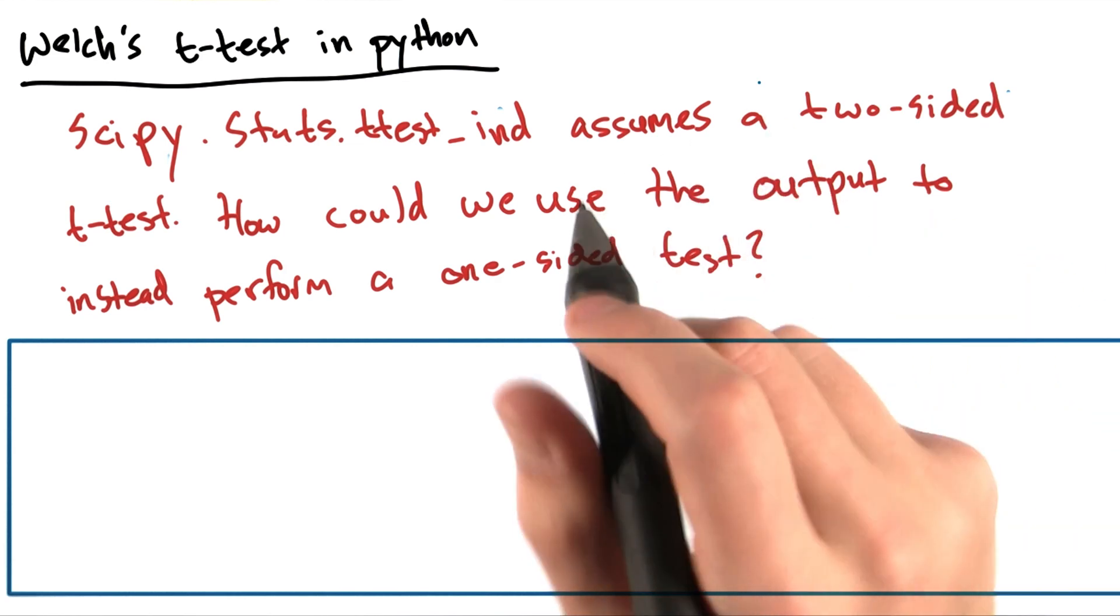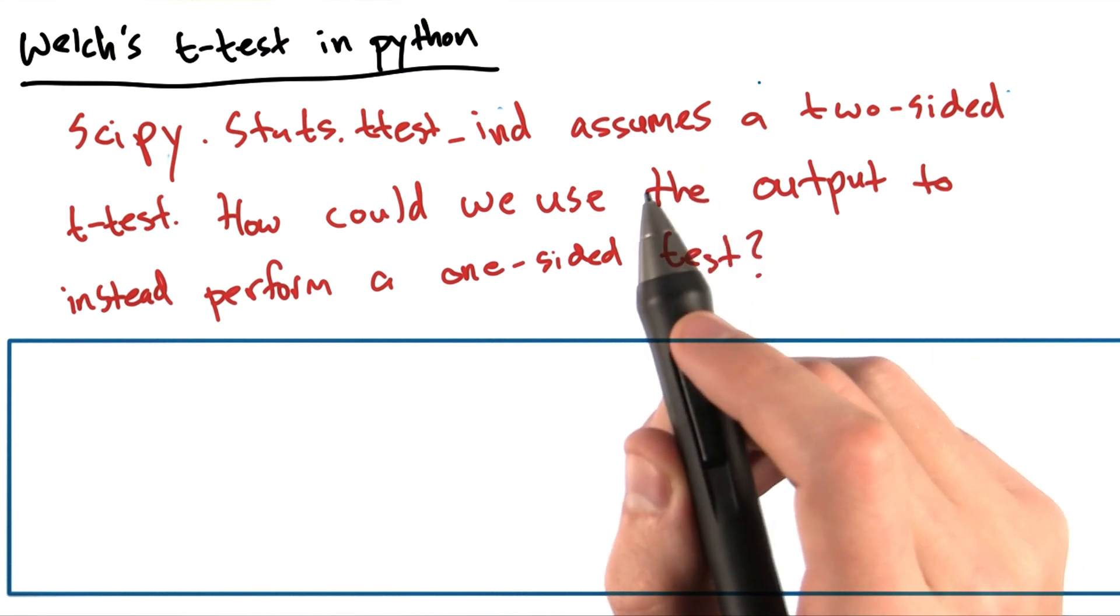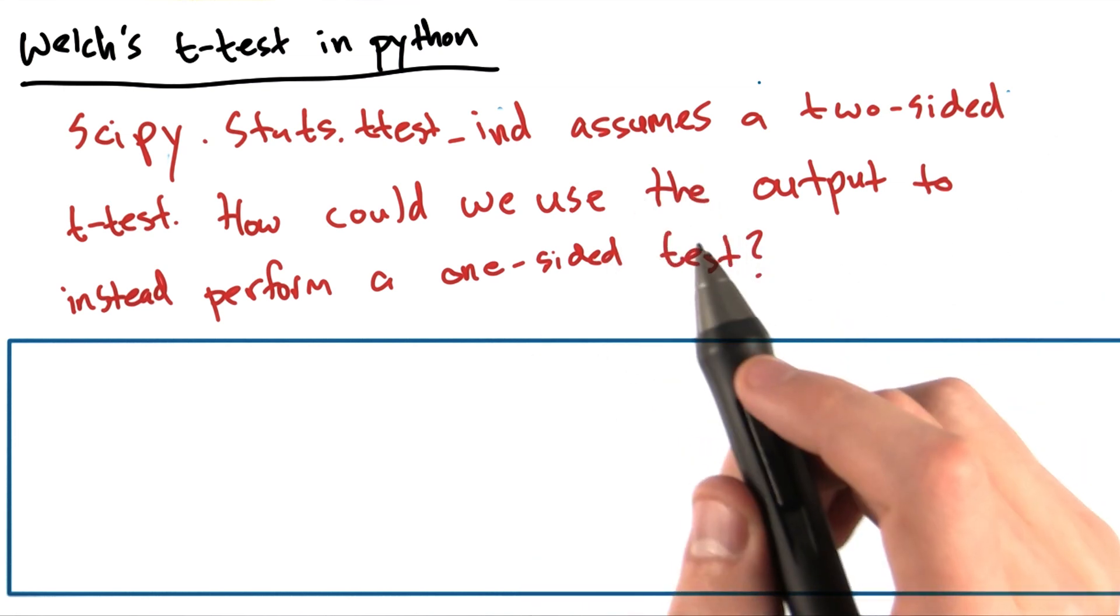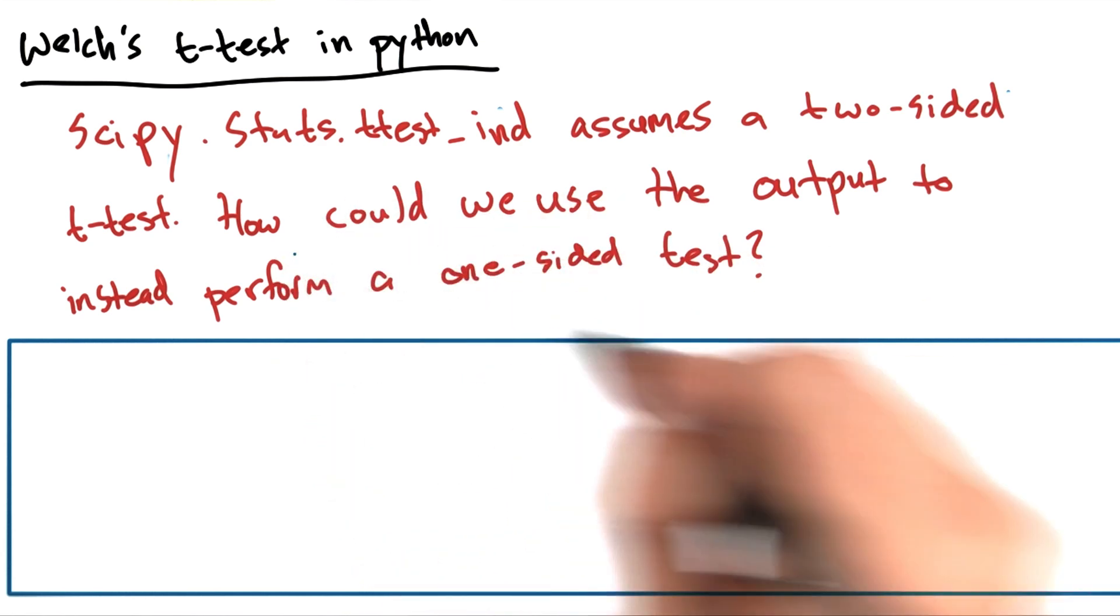Say we wanted to do a one-sided t-test. That is, we're interested in testing whether one mean in particular is greater than or less than the other. How might we do this given the output that this function produces? Write your answer in the text box below.